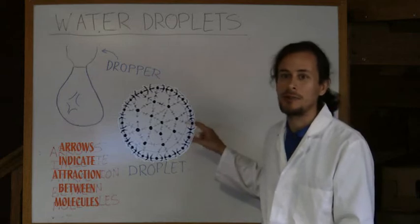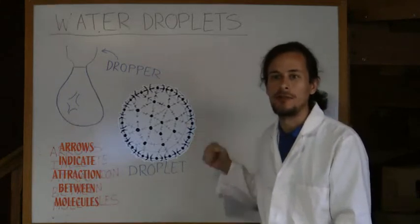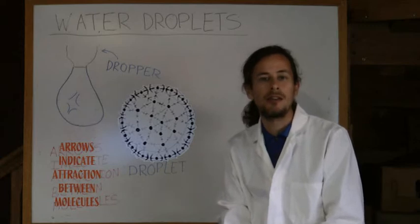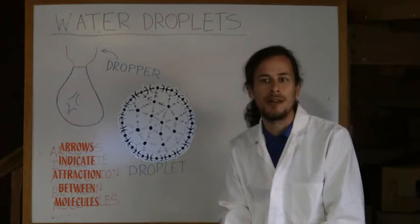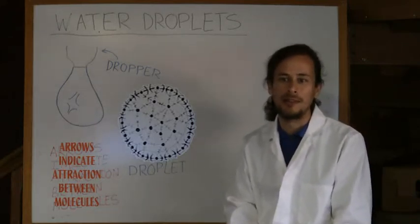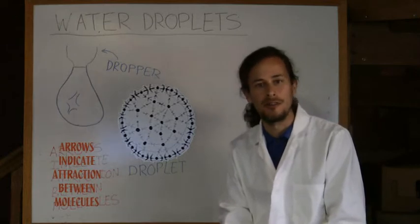This forms the smallest surface area for the droplet of water, which makes it a sphere. The cohesive forces acting between water molecules contribute to the shape of the water droplet, and the combination of these forces at the surface is known as surface tension.